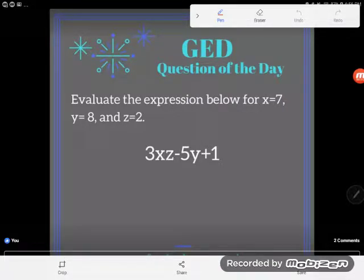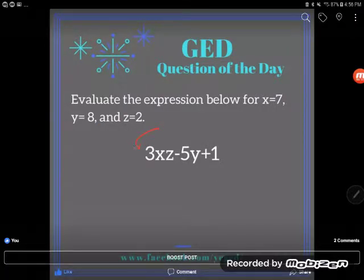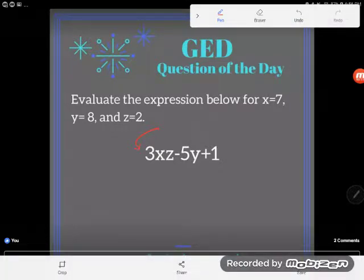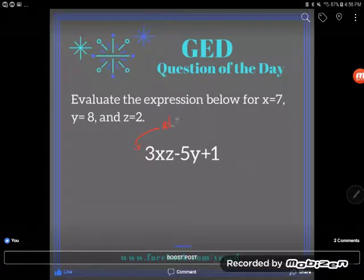Hey guys, it's GED question of the day time and look at that, looks like some algebra. Okay, let's take a look. It says evaluate the expression below for x equals 7, y equals 8, and z equals 2. And here I see my algebraic expression: 3xz minus 5y plus 1.